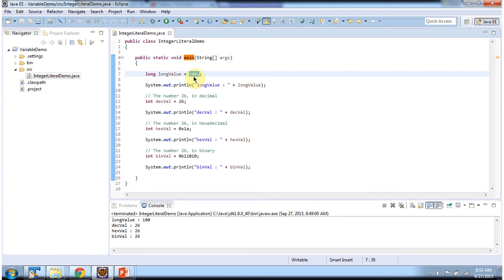This is how we can declare a long value. This is how we can declare an int value, and this is how we can declare a hexadecimal value. Here 0x indicates hexadecimal, and this is how we can declare a binary value. Here 0b indicates binary.